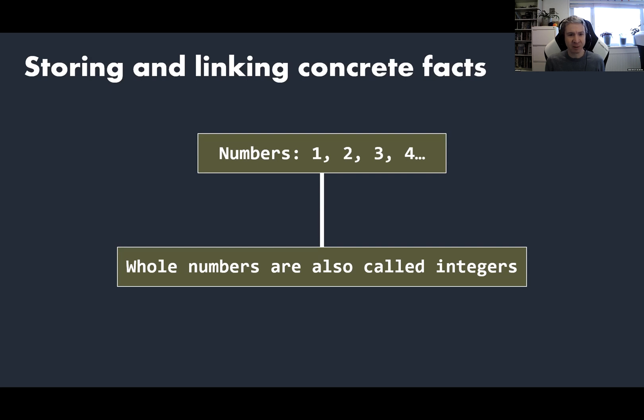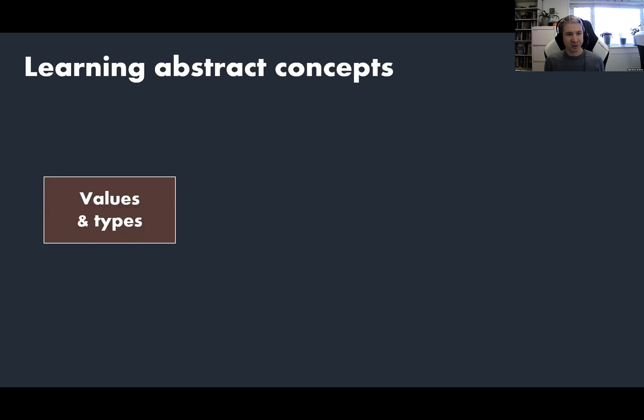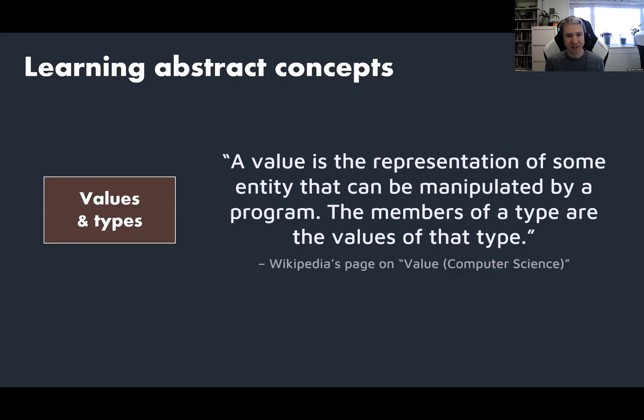A lot of what we do in programming is learning abstract concepts. Think, for example, about trying to learn about the concept of values or the concept of types when you're initially learning how to program. One possibility is to go to Wikipedia. The start of the article on values says that a value is the representation of some entity that can be manipulated by a program. The members of a type are the values of that type. But this isn't very useful for our learning. It's kind of very abstract and fuzzy, and it kind of slips through your fingers as you try and reread it to actually understand that. So it's quite difficult to learn abstract concepts by directly reading just a description about them.